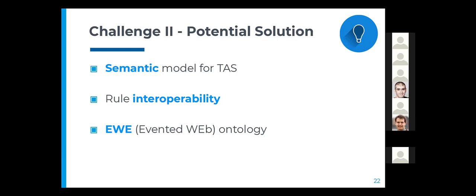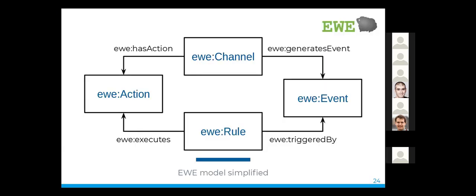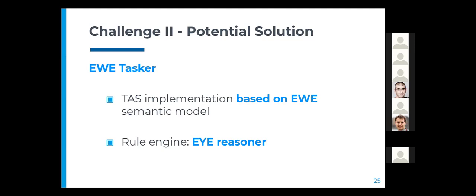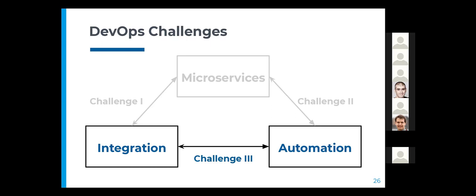There is an ontology named IWI which defines such a semantic model. The IWI ontology can enhance a task automation server with the flexibility of a linked data model and the reasoning capabilities of semantic rule engines. The main concepts in IWI are channels, which define interfaces with other services as well as the events and actions available for that interface, and rules, which are evaluated every time an event is triggered to decide which action needs to be executed. An implementation of a TAS based on the IWI semantic model is IWI Tasker, which uses the IWI Reasoner to evaluate its rules.